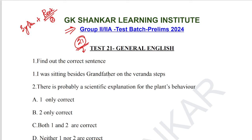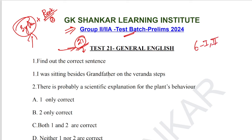Welcome everyone to G.K. Shankar Learning Institute. Group 2A Test Batch Prelims 2024, test number 21, General English. We have covered 21 tests in General English — the first test based on the syllabus, the rest based on the book. We have covered 12th to 6th standard. This test is exclusively based on the 6th standard, term 1 and term 2 based questions.